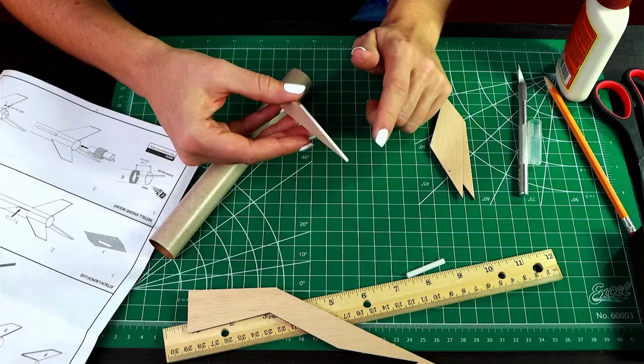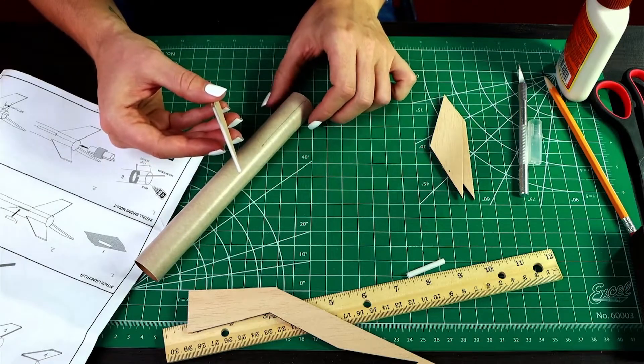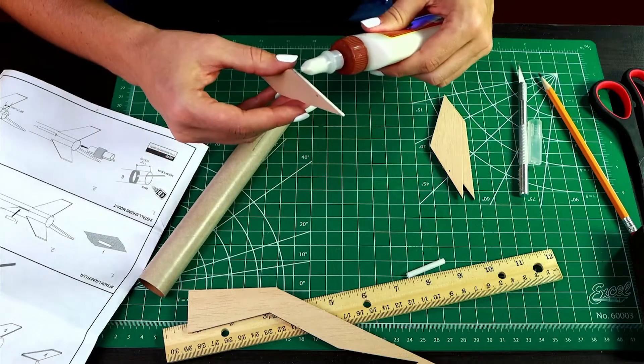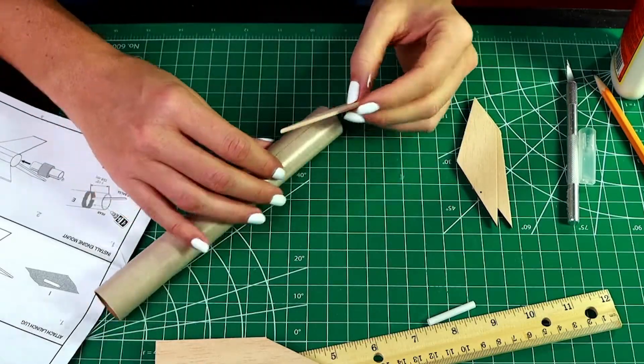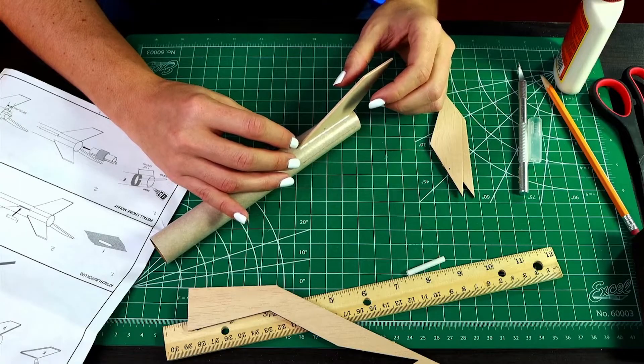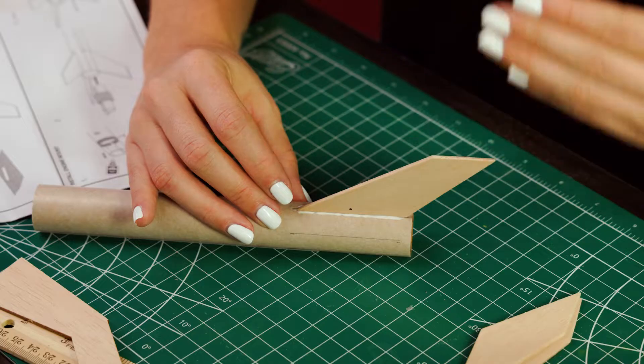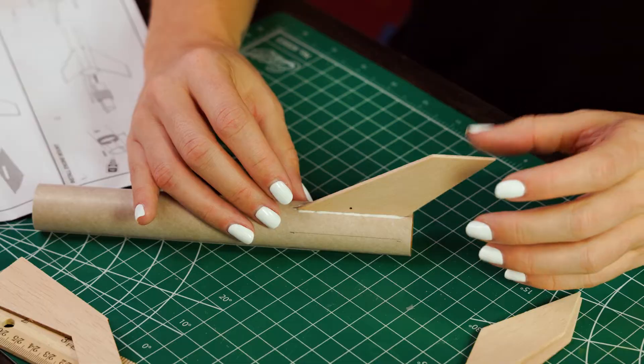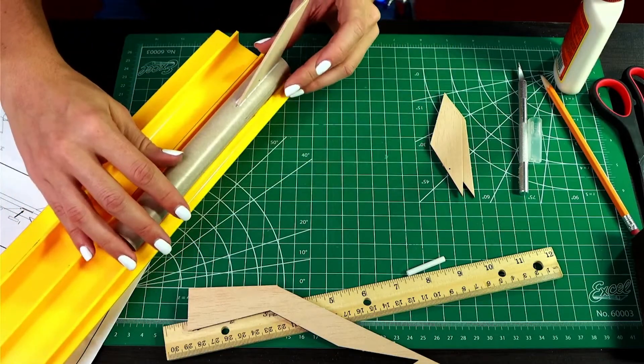Now that this glue has dried for about a minute, I'm going to apply a second layer and then attach it onto the body tube. When you're putting the fin on there, just make sure that you are really lining it up straight with the line that you made previously. Then you can let that dry for a second while you prep the next fin.